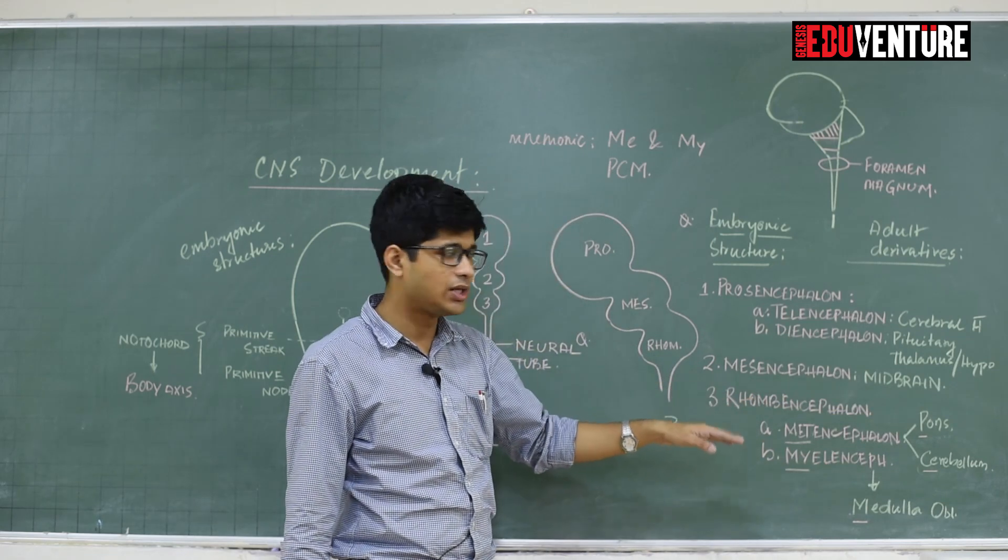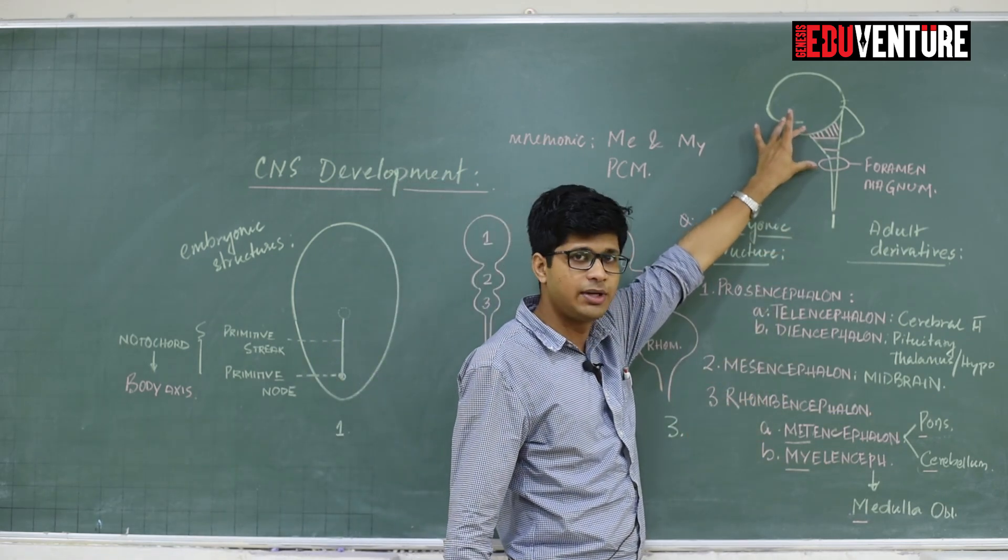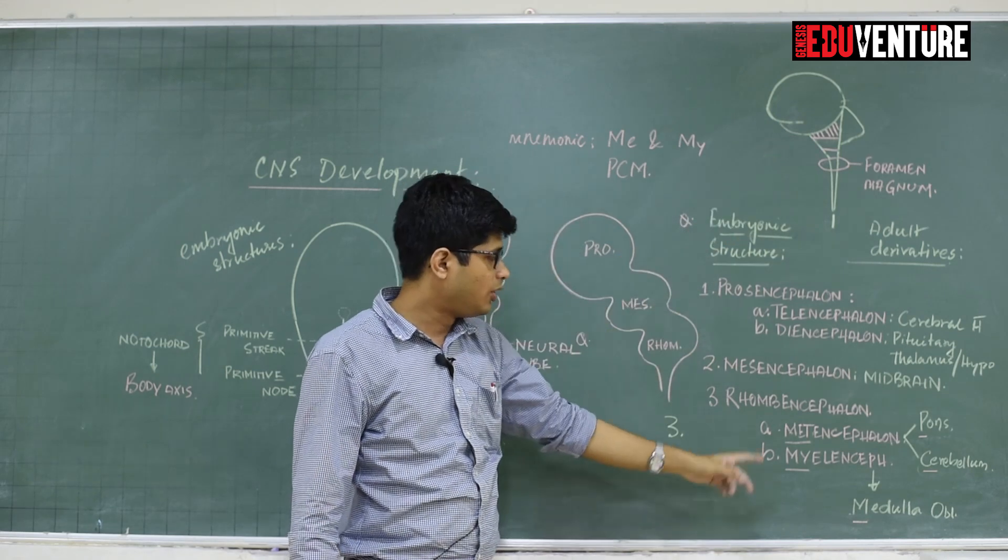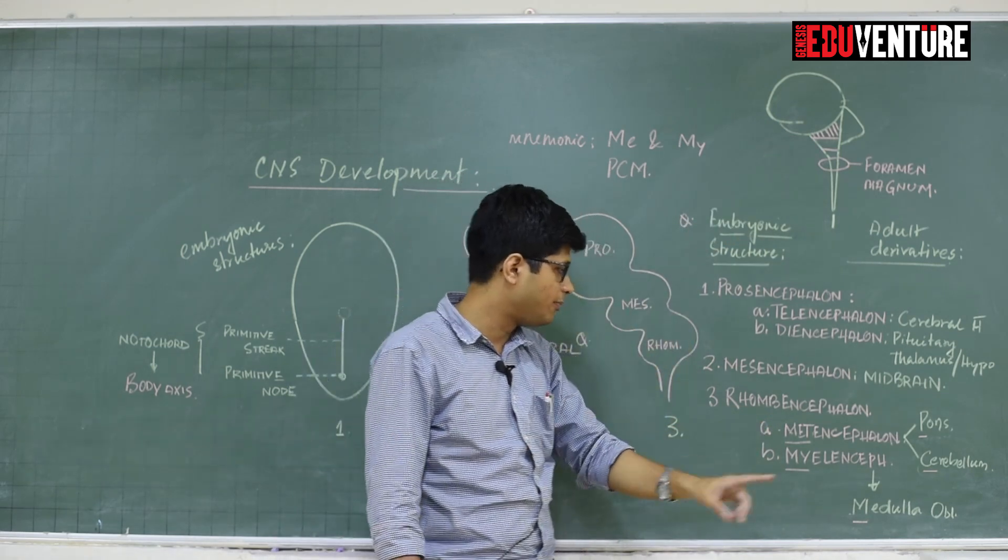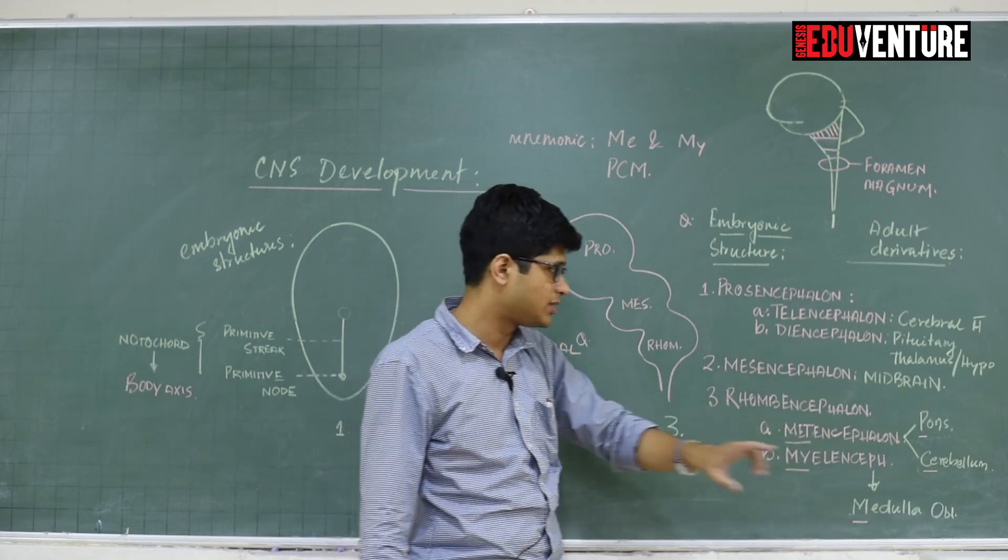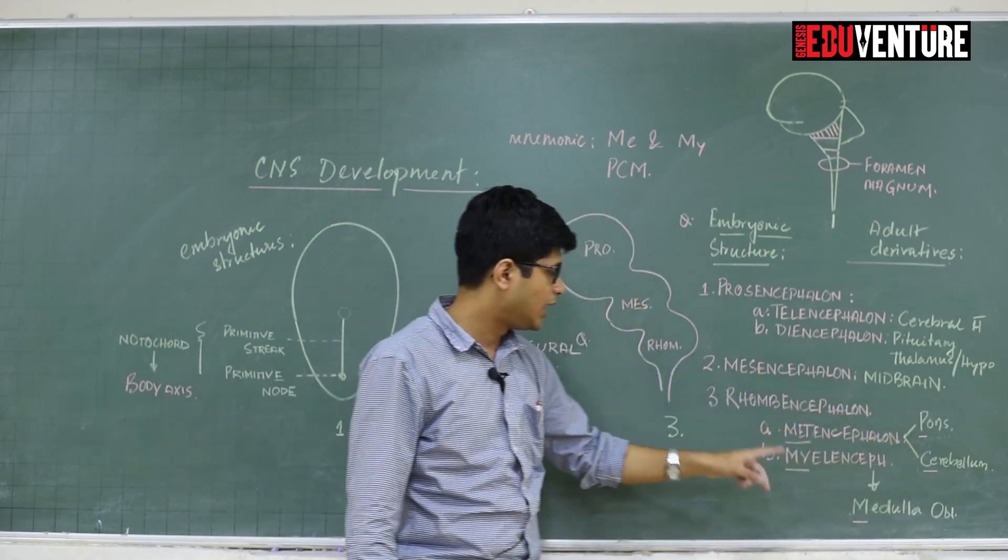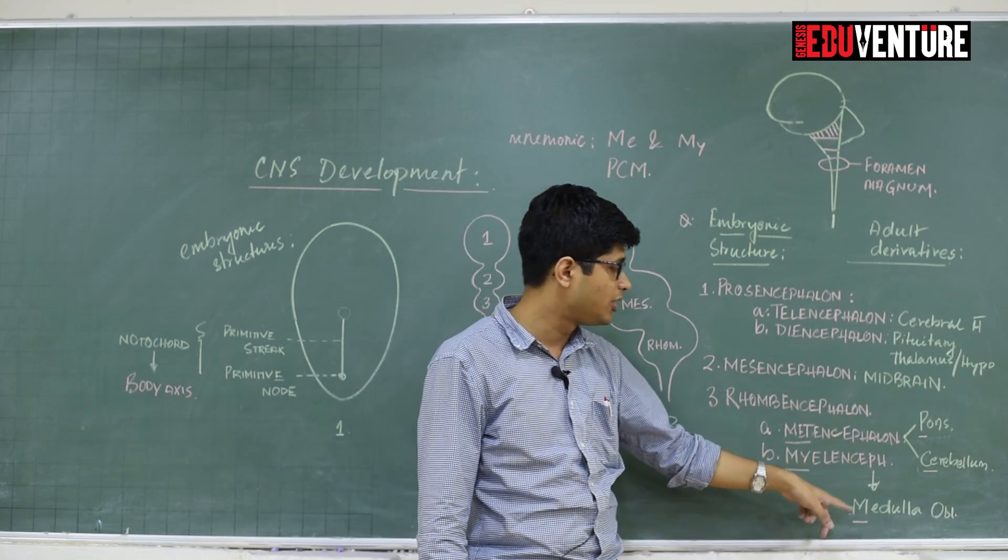The last structure is the rhombencephalon which will give rise to the brain stem. Rhombencephalon has got two parts, the metencephalon as well as the myelencephalon. Metencephalon will give rise to two parts, the pons and the cerebellum. Myelencephalon will give rise to the medulla oblongata. Very confusing, right?